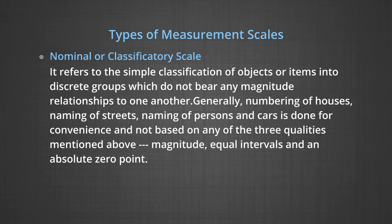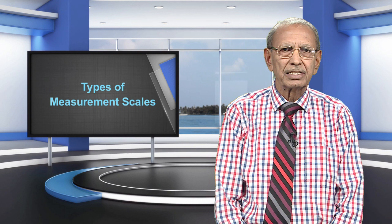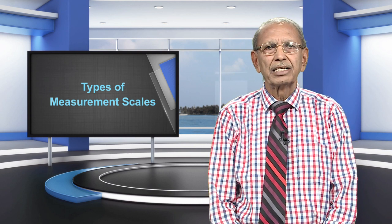The first type is the nominal or classificatory scale. It refers to the simple classification of objects or items into discrete groups which do not bear any magnitude relationships to one another. Generally, numbering of houses, naming of streets, naming of persons and cars, is done for convenience and not based on any of the three qualities mentioned above: magnitude, equal intervals, and absolute zero point. Some people do not regard nominal scales as a scale at all.